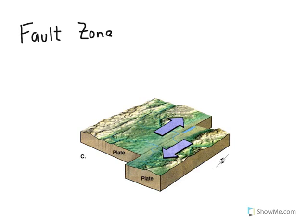The last of the plate boundaries we're going to look at is a fault zone. It's also sometimes called a transform boundary, and in this case we have two plates that are sliding parallel to each other.